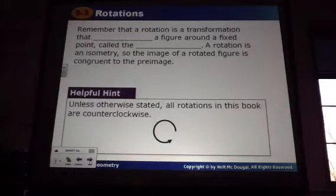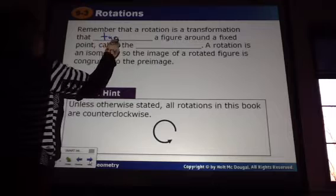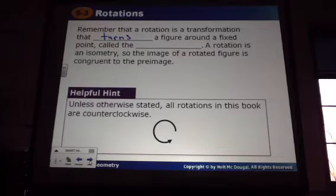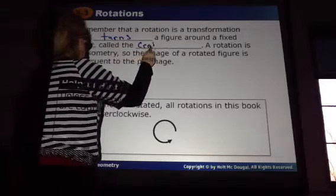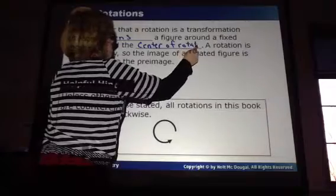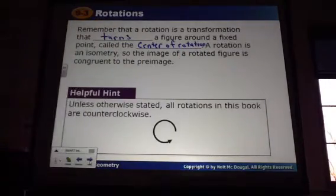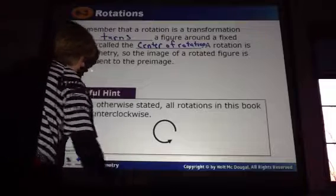Alright, tonight you're going to learn rotations 9-3. Remember that a rotation is a transformation that turns a figure around a fixed point called the center of rotation. A rotation is an isometry, so the image of a rotated figure is congruent to the pre-image. Now remember, unless stated otherwise, any rotation that we do is counter-clockwise.